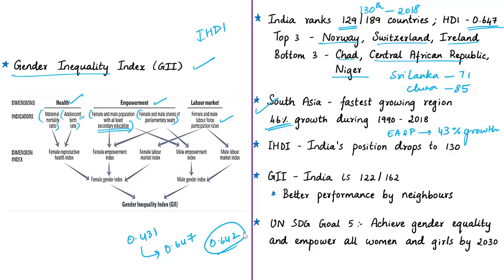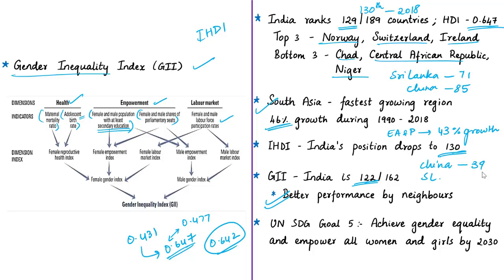In the Inequality-Adjusted HDI, India's position drops by one position to 130th, with a score of only 0.477. The news article states India has lost half of its progress made in the past 30 years. The gap between HDI (0.647) and IHDI (0.477) indicates significant inequality prevailing in India. On the Gender Inequality Index, India ranks 122nd out of 162 countries, while neighbors like China (39th), Sri Lanka (86th), Bhutan (99th), and Myanmar (106th) all perform better.